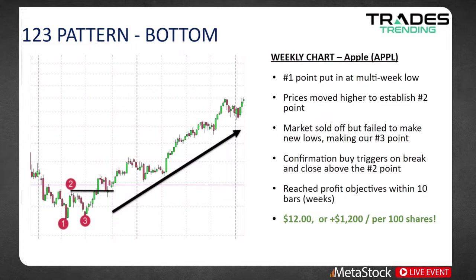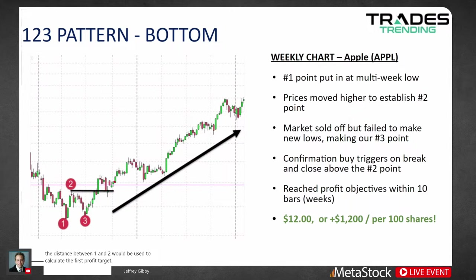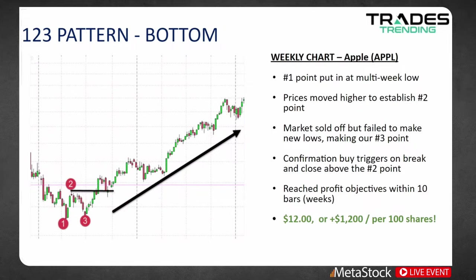This is a weekly chart of Apple — a great way to catch some longer-term position-type moves and manage longer-term portfolios. Here we have a multi-week low. We have a 1-2-3 bottom — a double bottom as well. You see we break above the number 2 on this large bullish candle, go sideways for a handful of weeks, come down, hook back up. That's our confirmation to get long Apple. How do we do it? Buy Apple stock, call options, call spreads, sell bull put spreads — whatever your flavor or style may be.